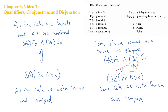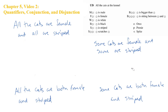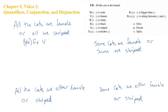Let's see another set of examples. What we're going to do now is change all the conjunctions to disjunctions. So in the upper left, instead of all the cats are female and all are striped, we're going to have all the cats are female or all are striped. So we get all x Fx or all x Sx. And down below, with a single universal quantifier, we have for every x: Fx or Sx.